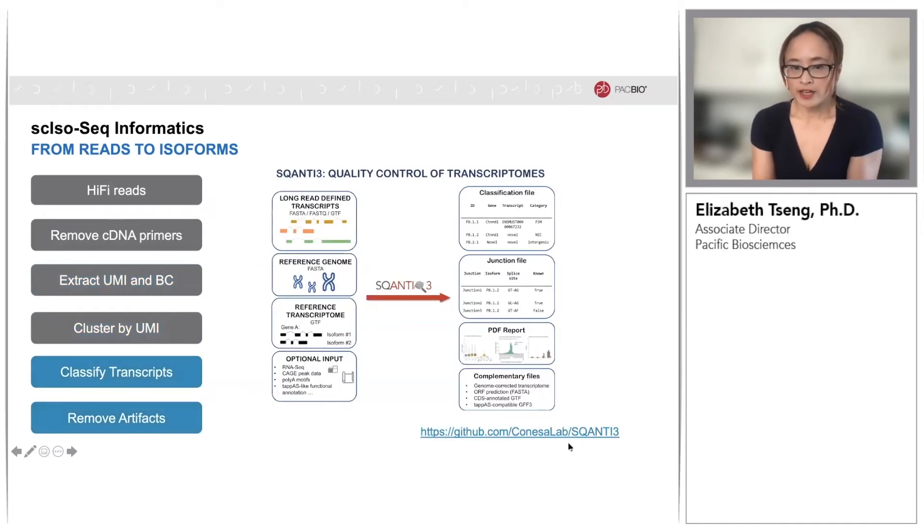The deduplicated transcript sequences can then be classified against a reference annotation, such as GenCode, using a tool called SQANTI. SQANTI was designed specifically for the classification and QC of long-read transcriptome. In the next slide, I will briefly describe the classification system that was developed with SQANTI.